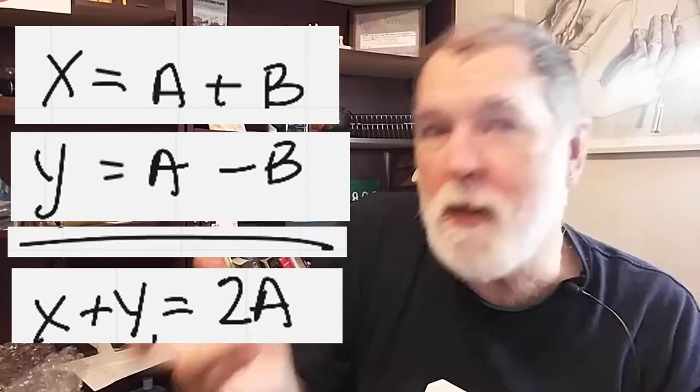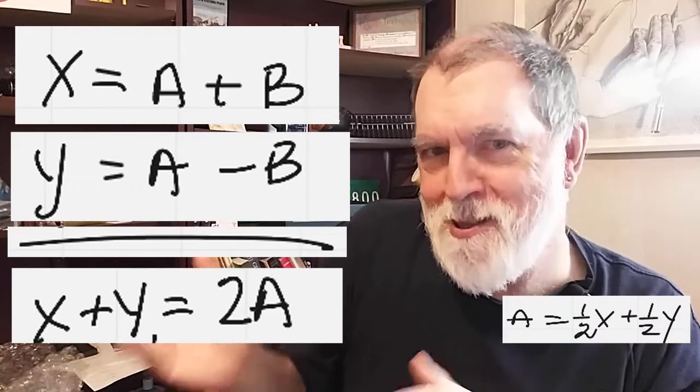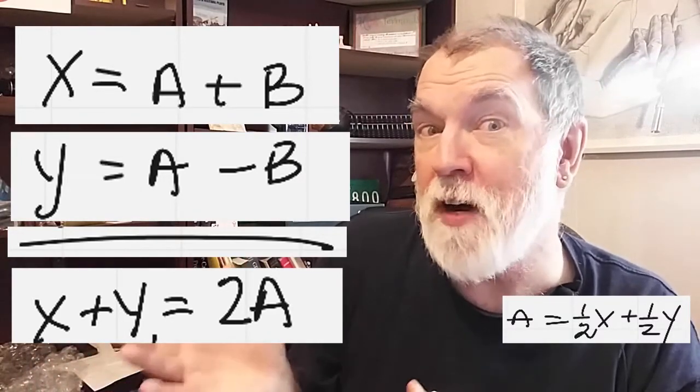X plus Y will therefore be 2A. A therefore is 1 half of X plus 1 half of Y.